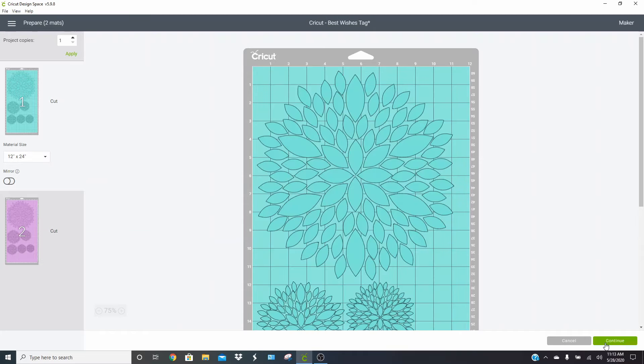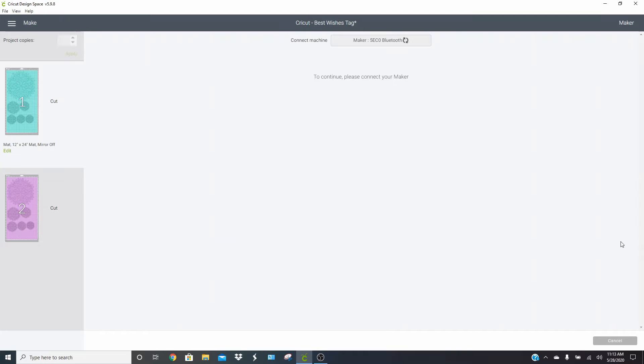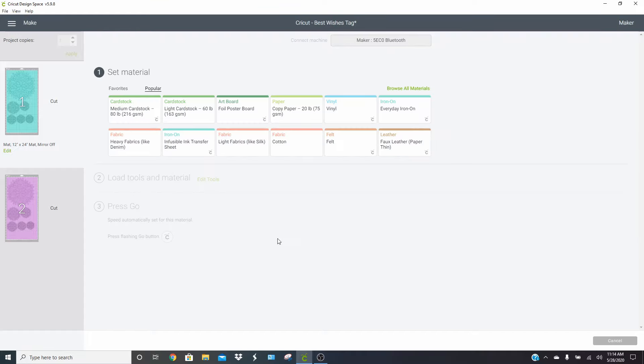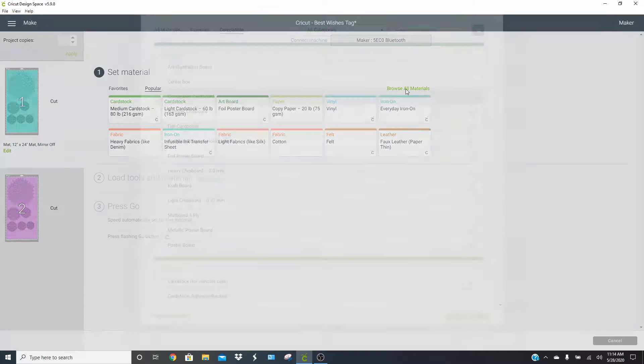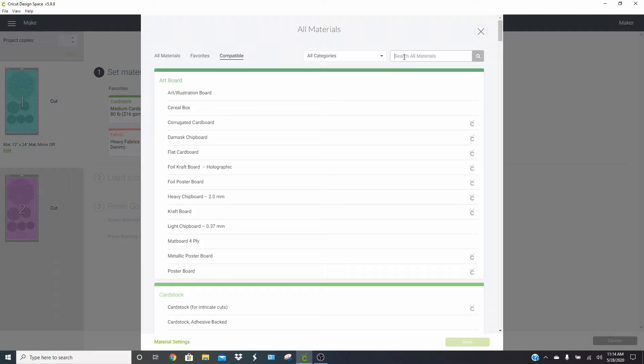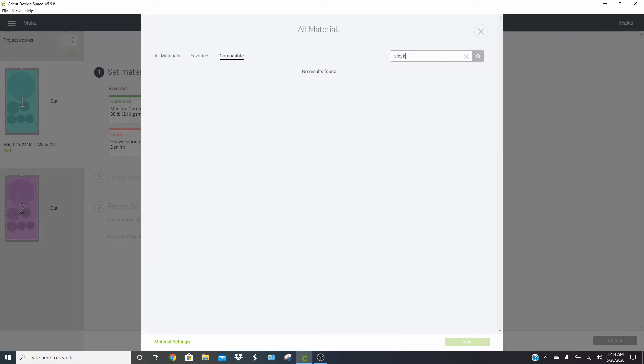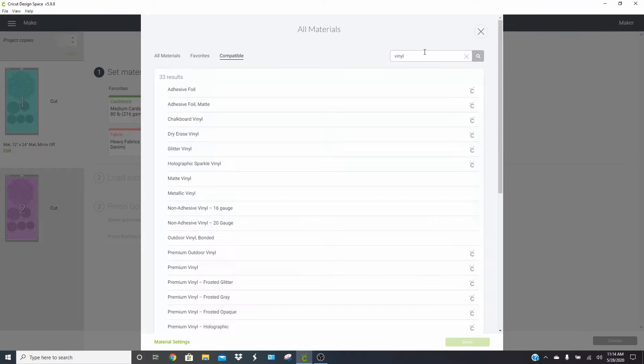So now what we're going to do is go ahead and click continue. And for this product, you want to go into browse all materials and what you're going to look for on this is the custom setting for vinyl mat. So what I'm going to look up is just the word vinyl. And we're going to see what our options are here because some stuff has changed a little bit.